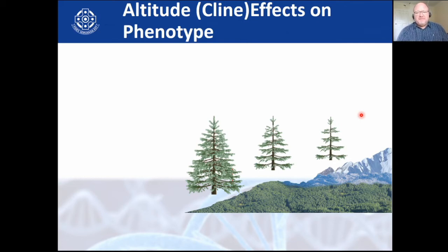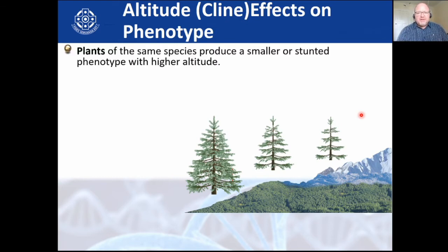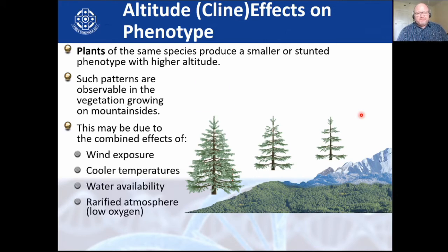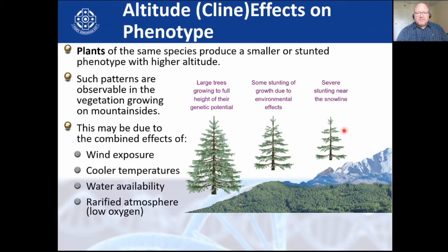Altitude is another environmental effect. If you drive up Ruapehu or go up to Queenstown, the landscape and plant growth change — plants become shorter and shorter. You might have the same tree species growing at the bottom and top of a mountain, but at the top it will look very different due to temperature, water availability, low oxygen, and lower carbon dioxide in the atmosphere.